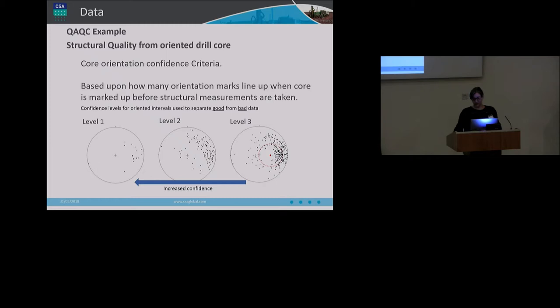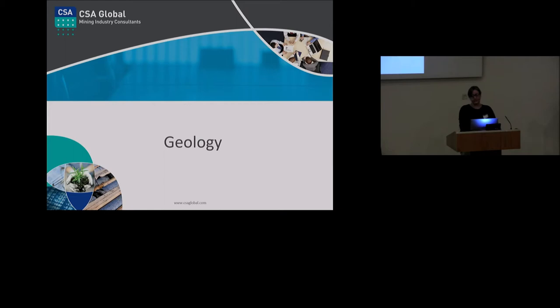As an example of alternate QC data that you can collect, this is confidence criteria in oriented core. Your core is coded during markup according to the confidence in your core orientation mark, where a higher confidence is applied to groups of orientation marks that align with one another in the driller's markings. It provides quite valuable information about which measurements can be relied upon and which may need to be removed from the data set when reviewing structural measurements.